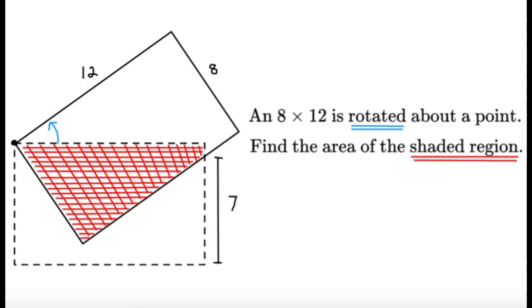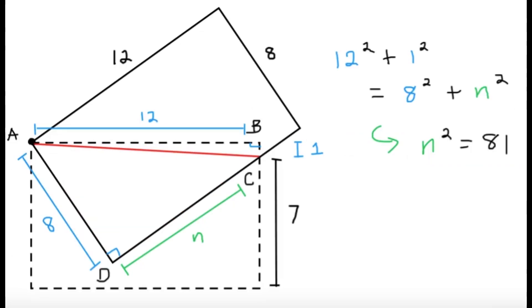Now here we have a shaded region and that's a quadrilateral, but we can view this shaded region a little bit differently because we can actually, as you can see here, draw that red segment and it actually splits that quadrilateral, let's just call it ABCD, into two right triangles.